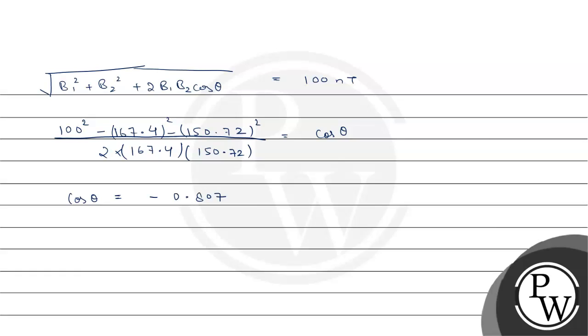So it will be minus 0.807. So theta will be equal to cos inverse of minus 0.807 and it is equal to 143.8 degrees approximately. Hence we have found out that theta is equal to 143.8 degrees.